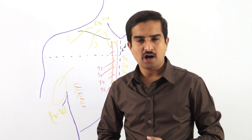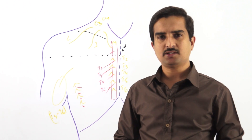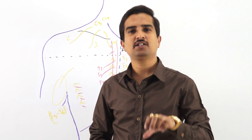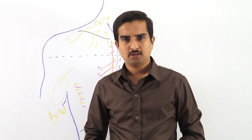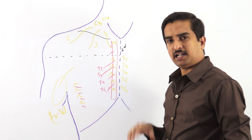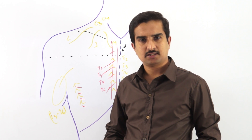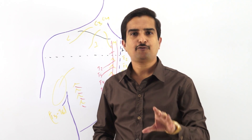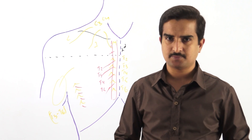There are two arterial groups seen at the superficial fascia of the pectoral region. One group is related to the anterior cutaneous nerves; they are called the perforating branches of the internal thoracic arteries.